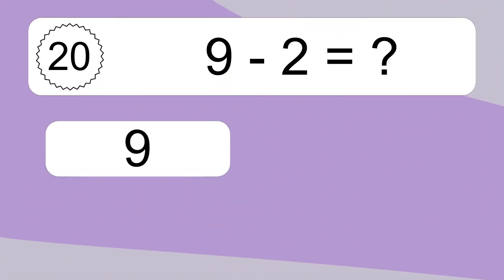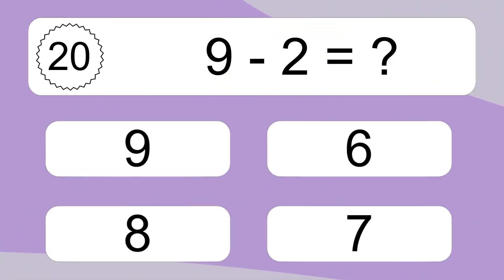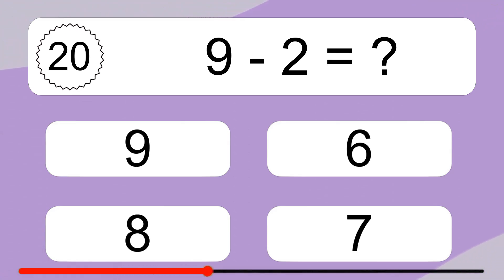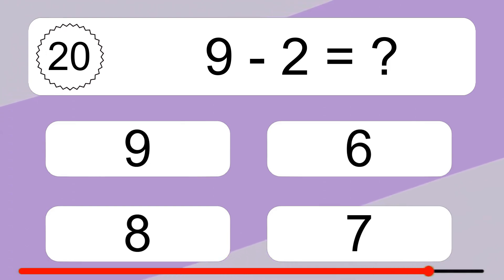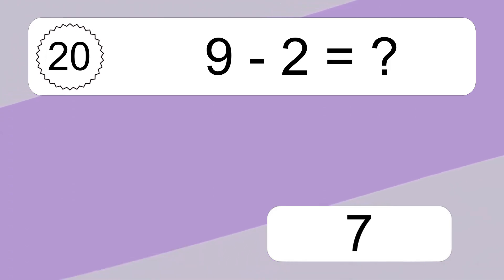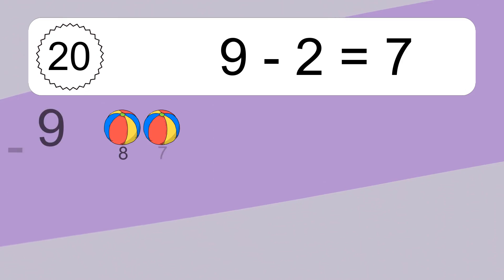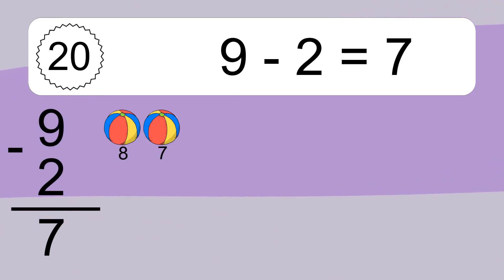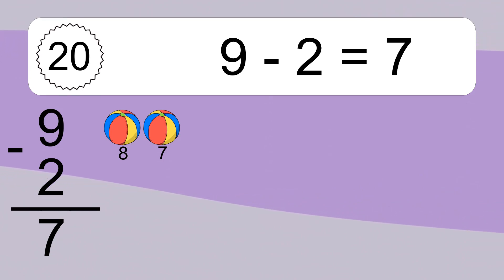9 minus 2 equals what? 9 minus 2 equals 7. Let's count it. 8, 7. We'll see you then.